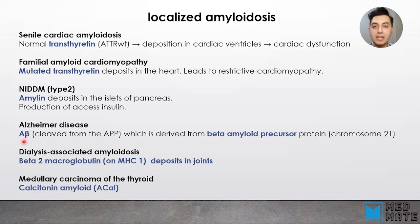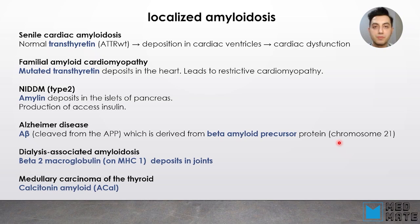Another example of localized amyloidosis is Alzheimer's disease, where we have cleavage of APP producing A-beta, derived from beta amyloid precursor protein on chromosome 21. This is important because chromosome 21 is connected with Down syndrome, and patients with Down syndrome are prone to developing Alzheimer's disease by the age of 40. Dialysis-associated amyloidosis is another example, occurring because dialysis cannot eliminate beta-2 microglobulin — available on MHC class I — so these proteins get deposited in joints. The last example is medullary carcinoma of the thyroid, which involves calcitonin amyloid (APCL) deposition.